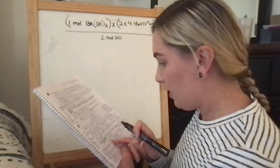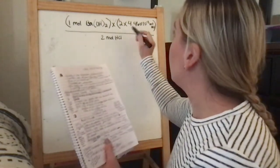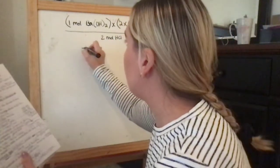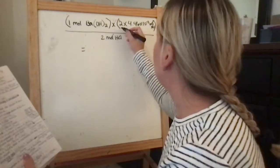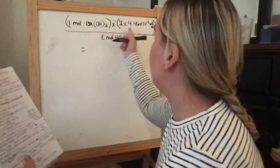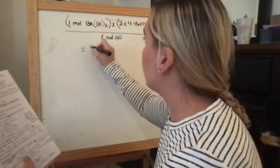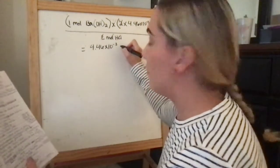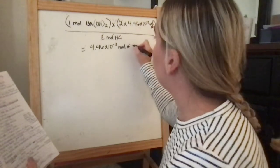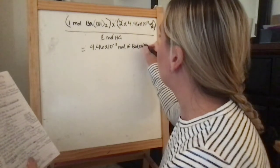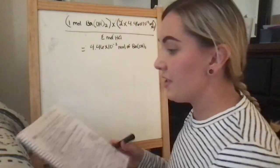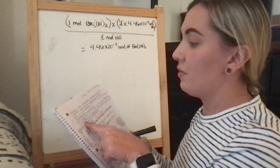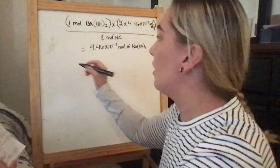So it ends up being 1 times this. So, 4.46 times 10 to the negative 3rd. And that is the mole of Ba(OH)2. So, now the concentration, it says in the question, of the barium hydroxide is 0.23M. So, going back to our molarity.